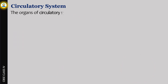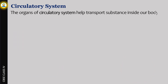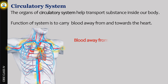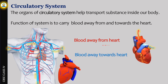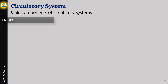The organs of the circulatory system help transport substances inside our body. The function of the system is to carry blood away from and towards the heart. Refer to the sketch below. The main components of the circulatory system are the heart, blood, and blood vessels.